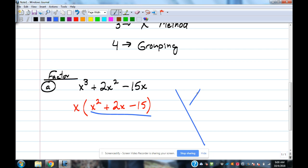So what goes on top of the x? Negative 15 on the bottom. Positive 2. What multiplies to be negative 15 and adds to be 2? 5 and negative 3. Very good. Positive 5, negative 3.